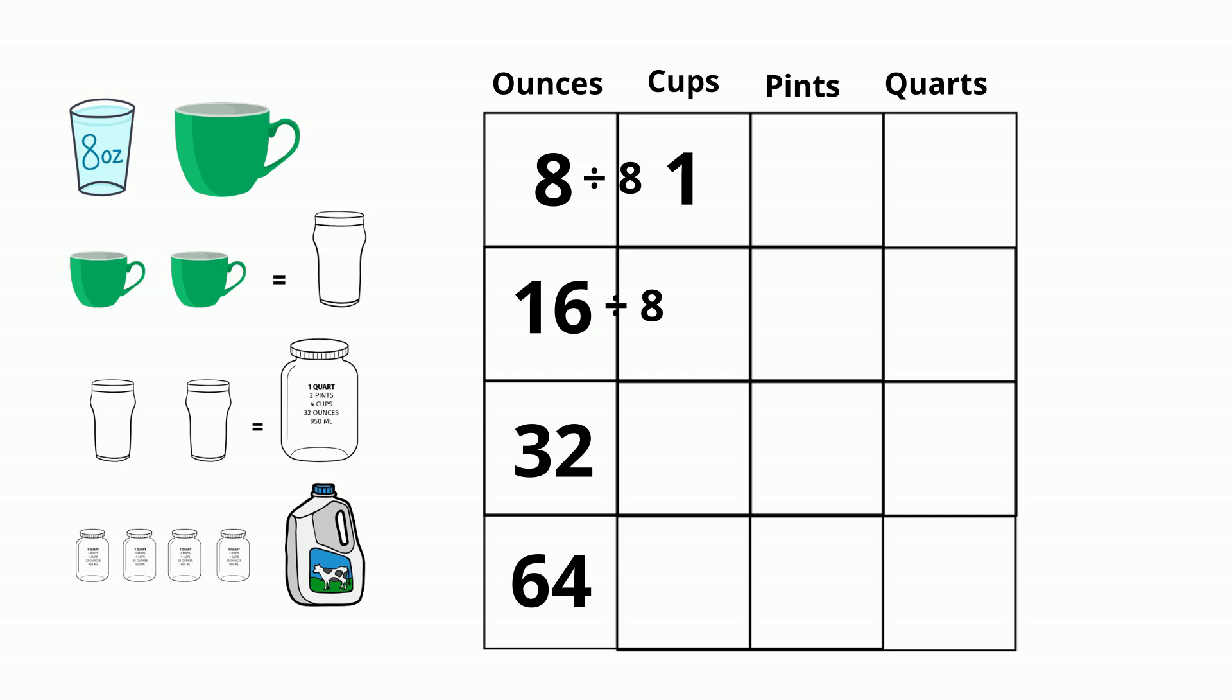So now for 16, let's divide it by 8, and that gives us 2 cups. Let's move down, 32 divided by 8 equals 4, and 64 divided by 8 equals 8.